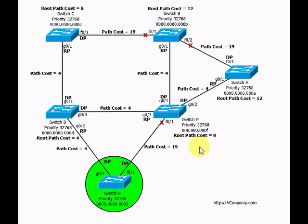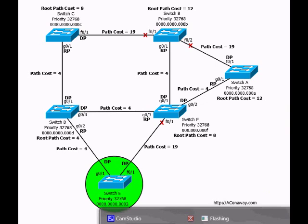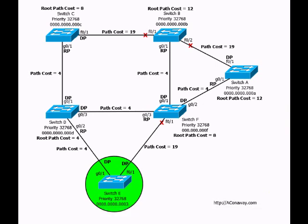So there you go. We've gone from one end to the other: we figured out that switch E is the root bridge, we found all the root ports for each switch, the designated ports for each segment, and the block ports to keep loops out of our network. Pretty easy — it's not that difficult. Of course it would be more challenging with 75 switches, but in this case, pretty straightforward.